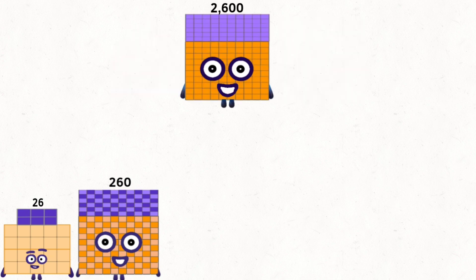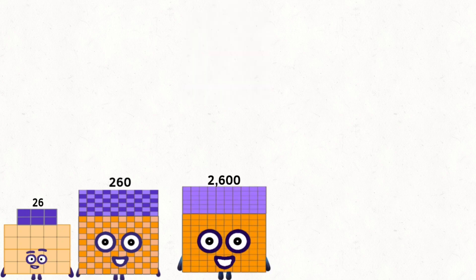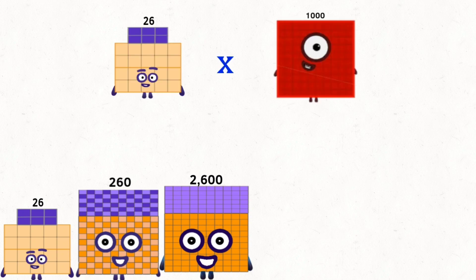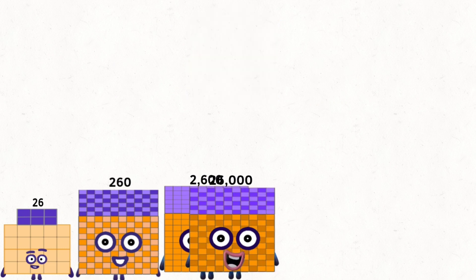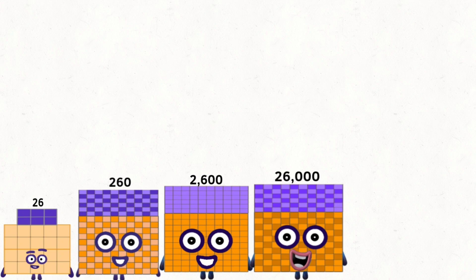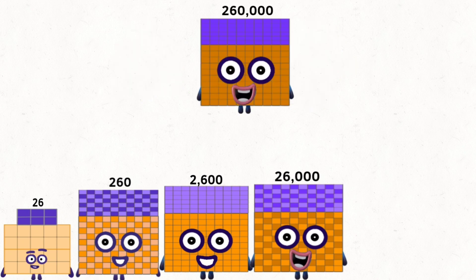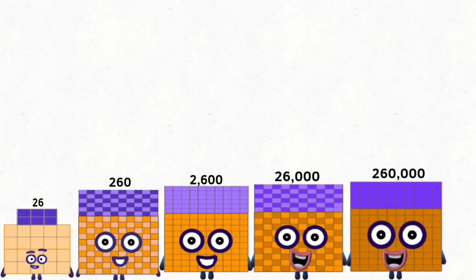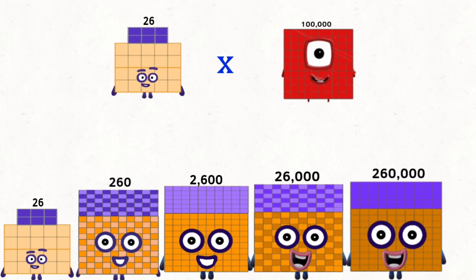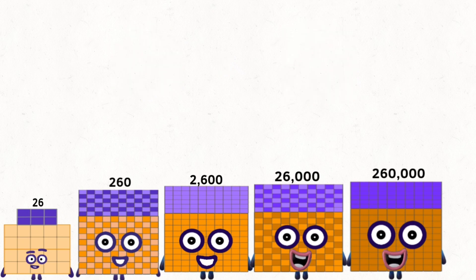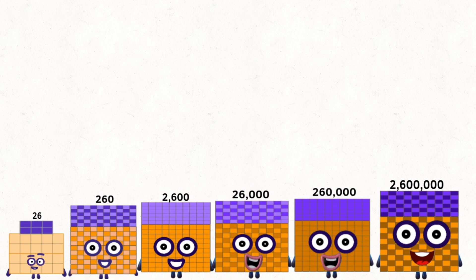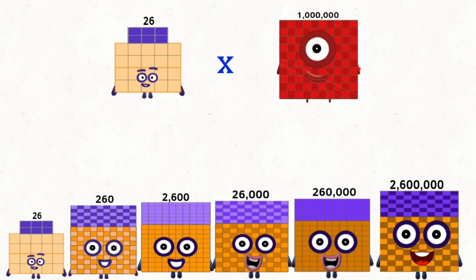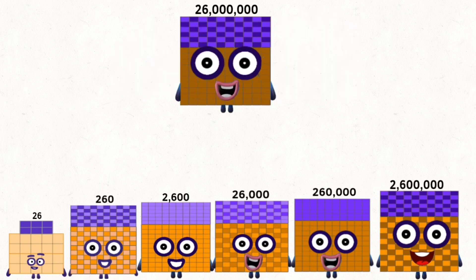26 times 1,000 equals 26,000. 26 times 10,000 equals 260,000. 26 times 100,000 equals 2,600,000. 26 times 1,000,000 equals 26,000,000.